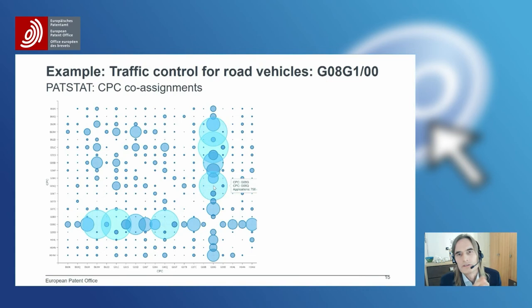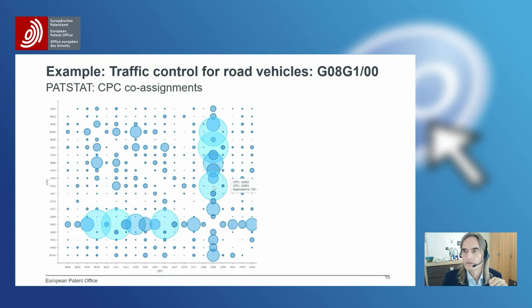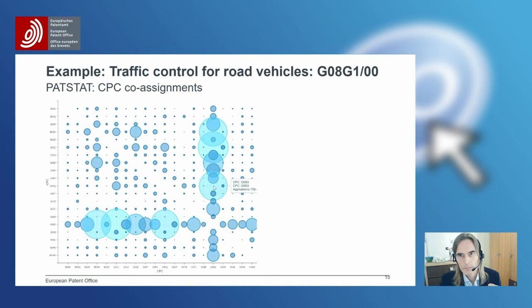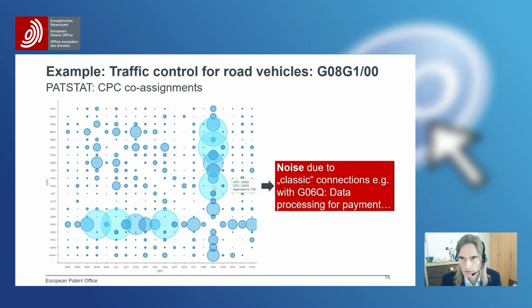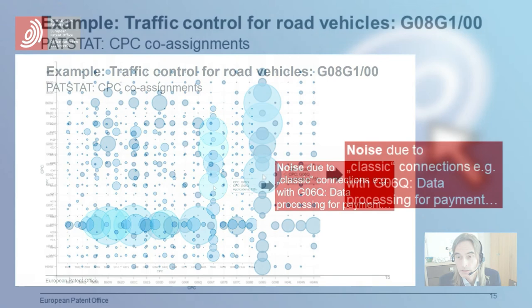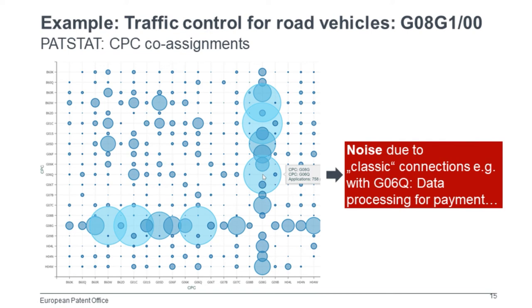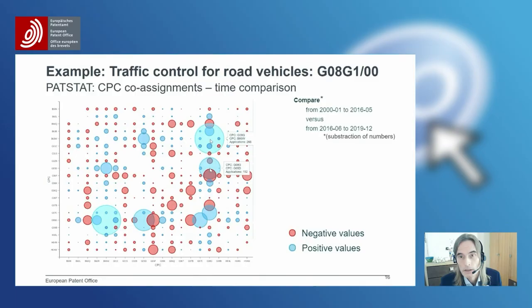We are now looking into a different area: traffic control for road vehicles. We analyze this area by looking at CPC co-assignments. On both axes of this chart are CPC codes, and we look at how often the technology in G08G1 is combined with another technology. When we talk to examiners, they say new inventions are often simply new combinations of existing technologies. But in this picture there are many bubbles and it's difficult to understand what is important. There is quite a lot of noise — for example, classic connections with data processing for payment, which currently doesn't attract many filings — it's an old topic. We have added to the PATSTAT database a tool to compare these co-assignments over time.